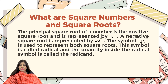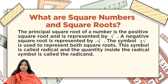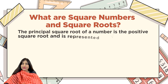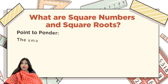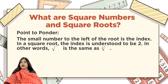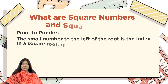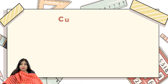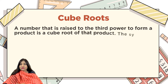The quantity inside the radical is called the radicand. Point to ponder: the small number to the left of the root is the index. In a square root, the index is understood to be 2 — in other words, the square root symbol is the same as writing a radical with index 2.